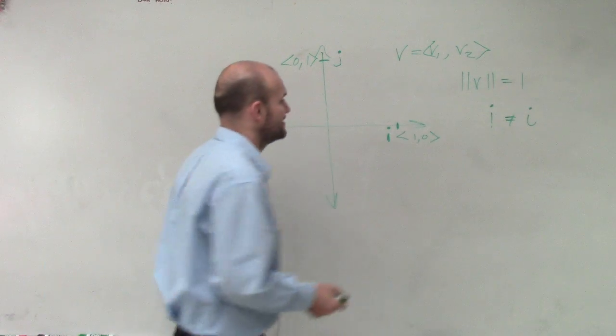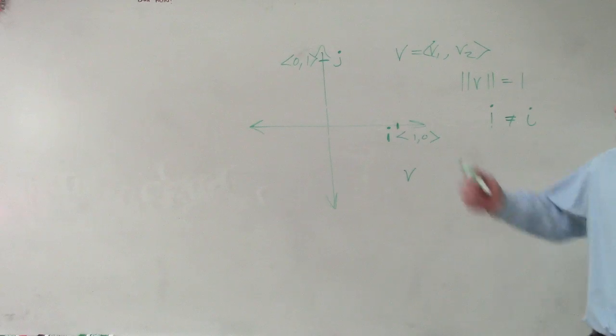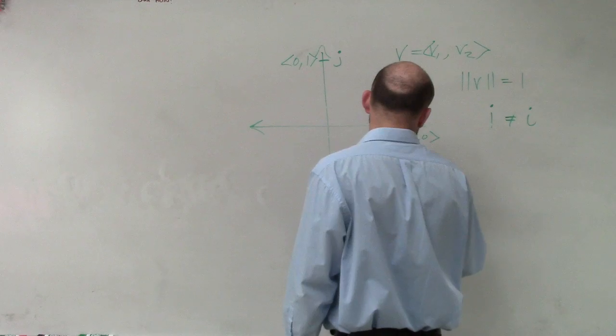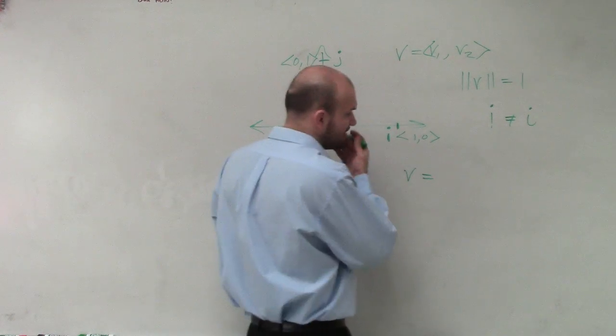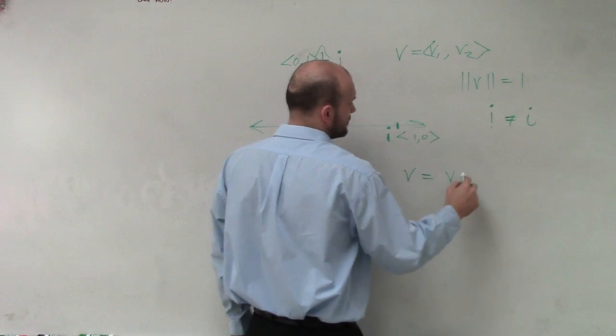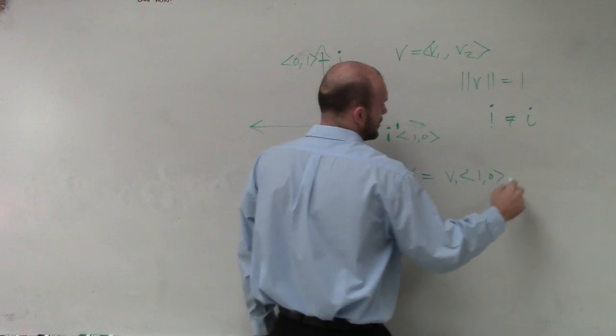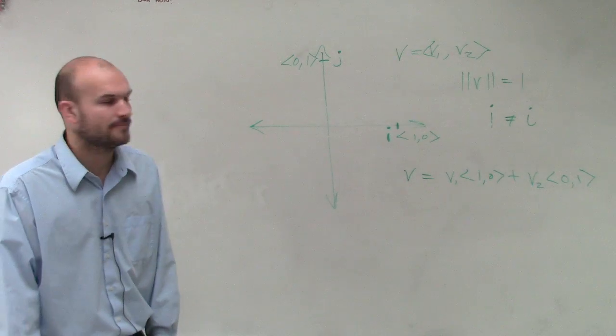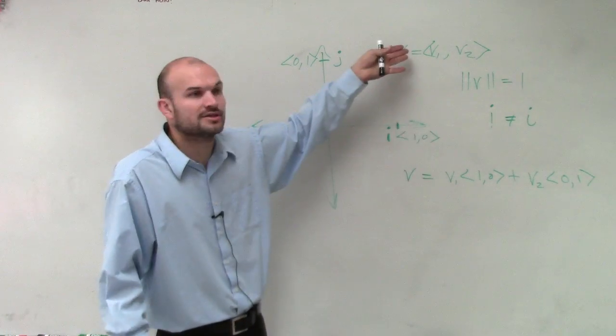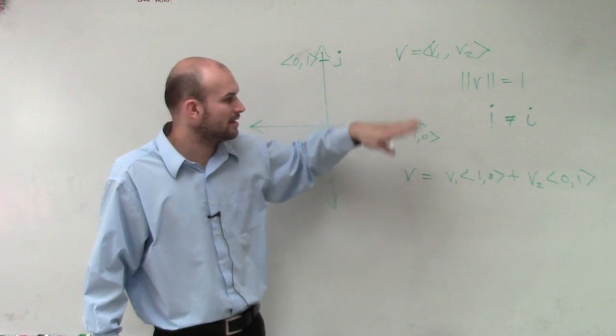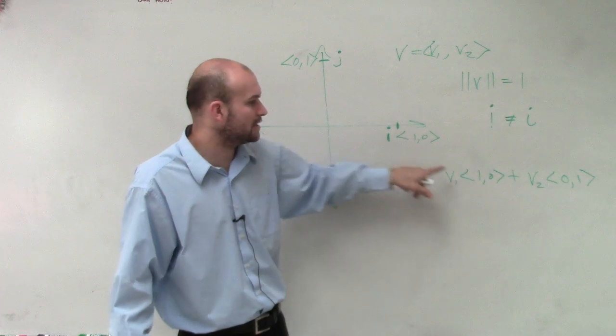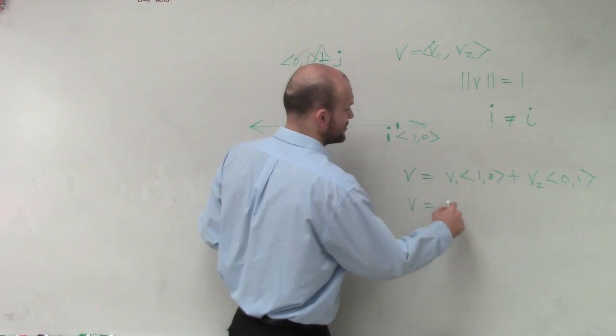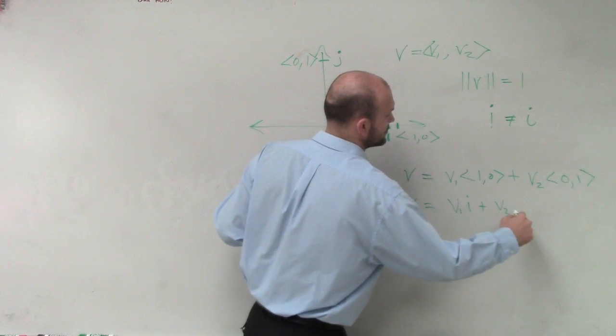So, PB and J. What I want you guys to understand is if I have a component form of a vector, we can write it by using i and j. V can be the same thing, as we can write this as component form as V1 times 1 comma 0 plus V2 times 0 comma 1. So if I have a component form of a vector, that's 3 comma 4, I can also write it like this. Now, we know what is 1 comma 0, that's equal to i, and what is 0 comma 1, that's equal to j. So we can say V is equal to V1i plus V2j.